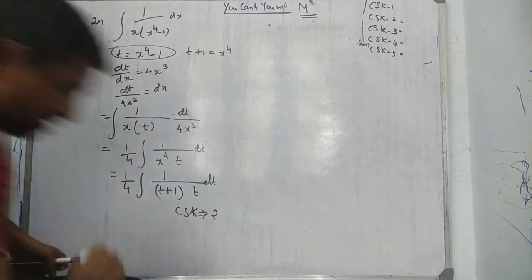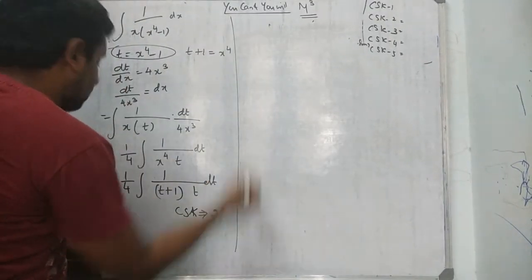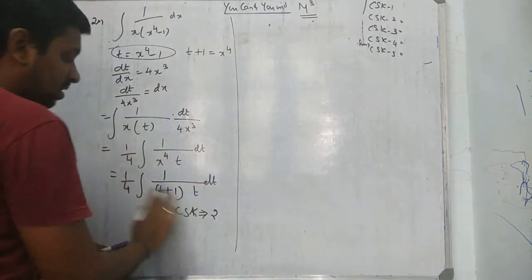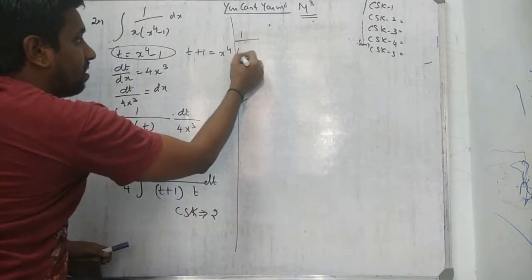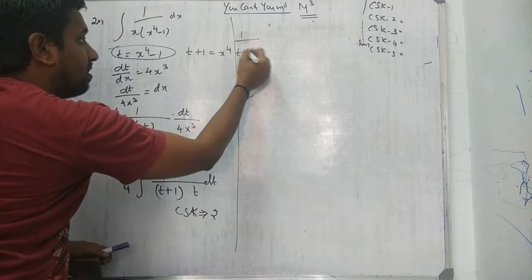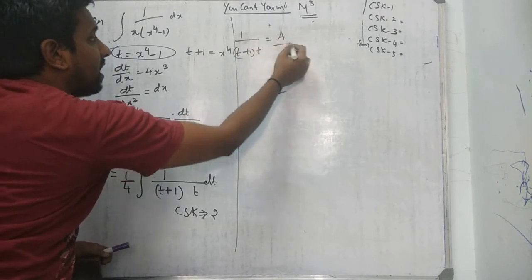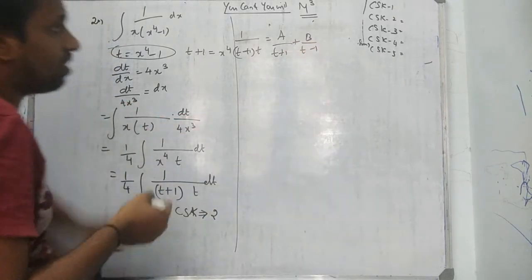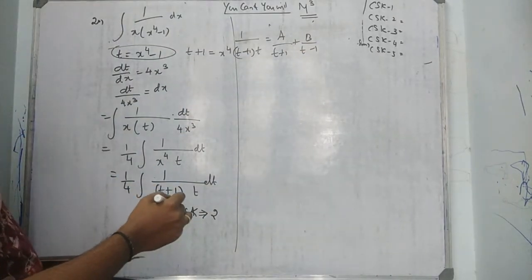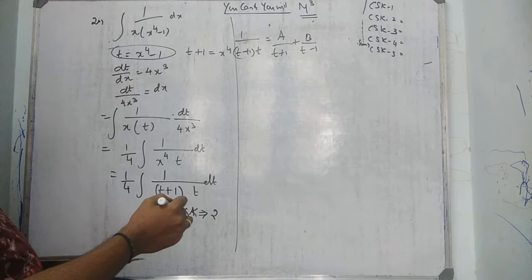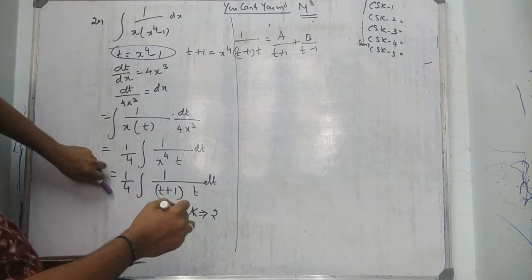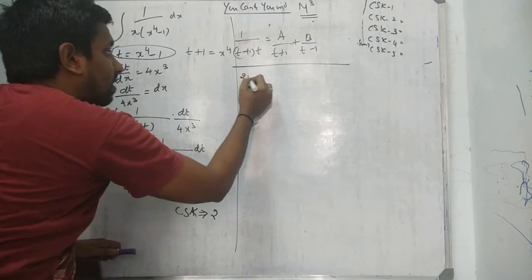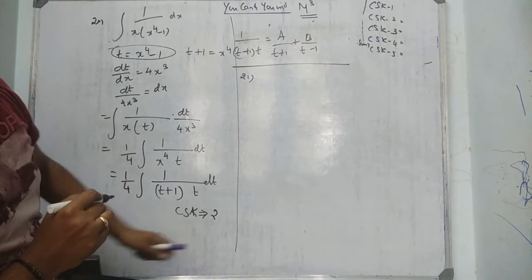CSK2: write A over (t + 1) plus B over t. Remember the 1/4 outside — don't forget it. Then substitute A and B values, integrate to get log terms. Question number 20 completed. Question number 21: integration of 1 over (eˣ minus 1) dx.